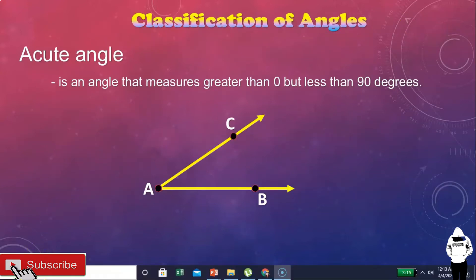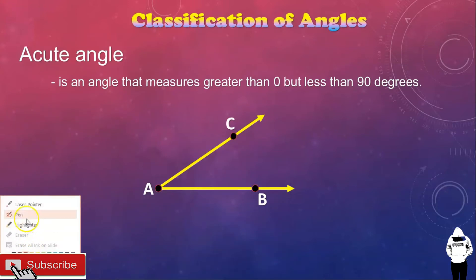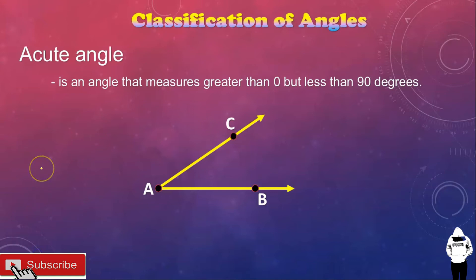Okay, focus po tayo sa classification of angles. First one is acute angle. What is an acute angle? It's an angle that measures greater than zero but less than 90 degrees.